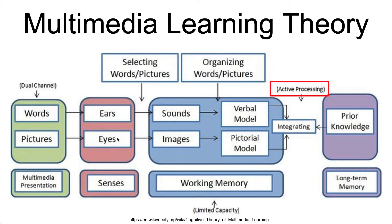You can see on this chart that we start with words and pictures going in through your ears and eyes, which move into working memory. If a person has enough time and uses enough mental effort, they can integrate those new words or images with prior knowledge and move them into long-term memory. That integration is an active process.